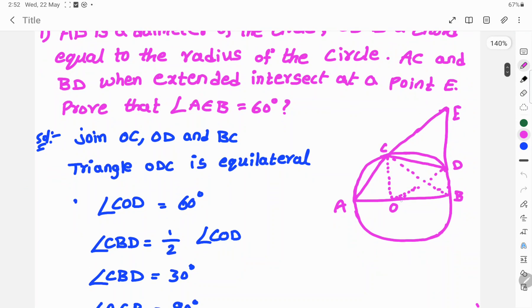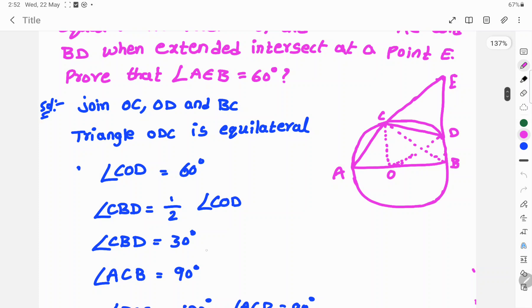Then angle CBD equals half of COD. So angle CBD equals 1/2 times COD, which is 60 by 2, equals 30 degrees.